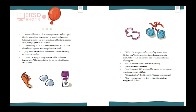Stink could not wait till swimming was over. He had a great idea for how to learn frog sounds. He would need a comb, a balloon, two rocks, a can of spray paint, a rubber band, a rubber duck, some jingle bells, and that's all. Stink blew up the balloon and rubbed it with his hand. He clicked rocks together. He twanged a rubber band. Judy poked her head into Stink's room, and Mouse the family cat squeezed past her.